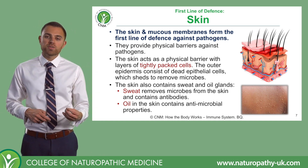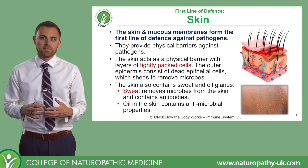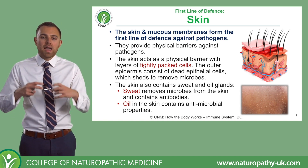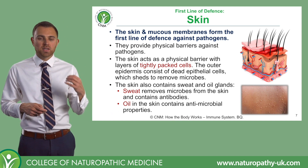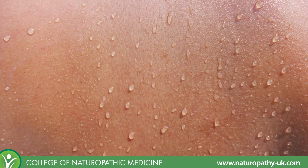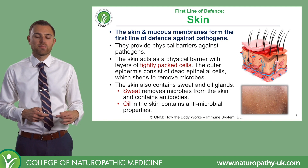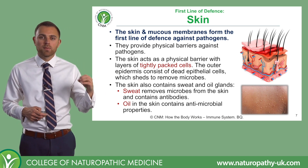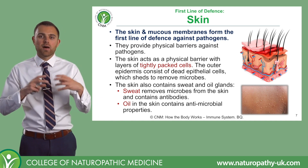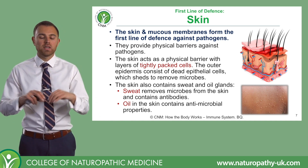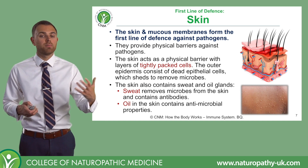On the skin we also have sebum, which is oil, and sebum does have antimicrobial properties that help stop bacteria from replicating. We also have sweat, which contains antibodies that target and attack any foreign cells trying to colonise the skin surface. Together, sebum and sweat provide a coating over the skin with antimicrobial properties that are very important as part of your immune system defence.